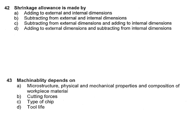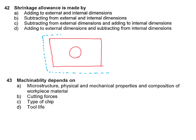With an example I will show. If we have a rectangular component as the final component with a circular hole in it, for the pattern we have to add to the outer dimensions — shown by the dotted line. Here we are adding to the external dimension and subtracting from the internal dimension.